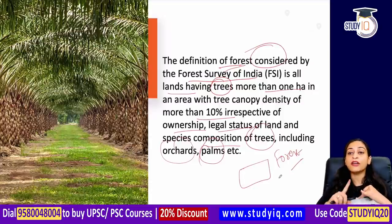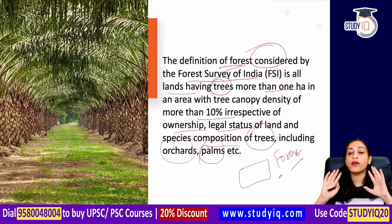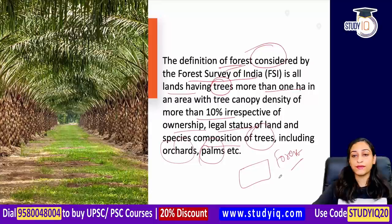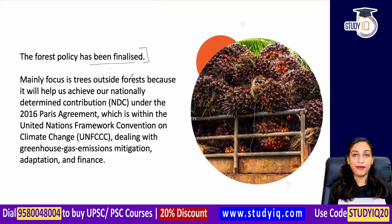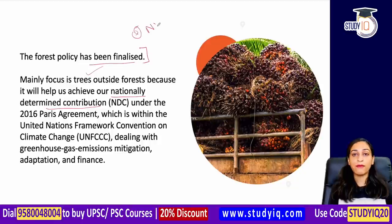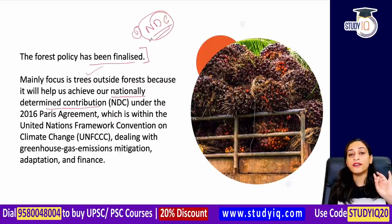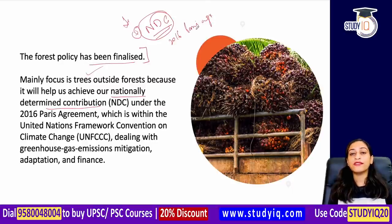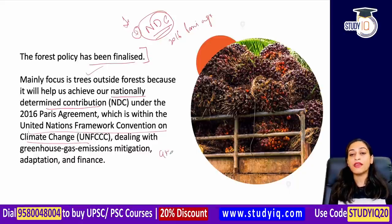More than one hectare, where there are trees and species — trees that come into plants and trees, such as composition of trees, orchids, palms — these are classified as forest. The National Determined Contribution — you can include it in the fourth point — because this is the Paris Agreement. In the 2016 Paris Agreement, within the United Nations Framework Convention on Climate Change, we have decided some of our goals to reduce greenhouse gases and control global warming.